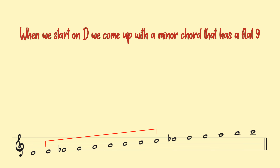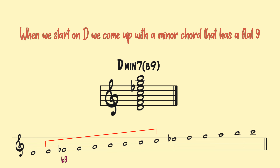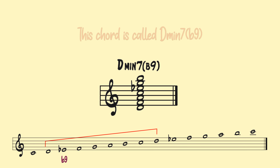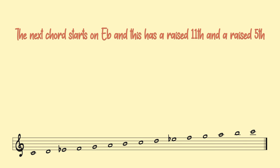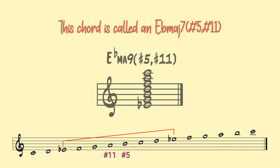When we start on D we come up with a minor chord that has a flat 9. This chord is called a D minor 7 flat 9. The next chord starts on E flat and this has a raised 11th and a raised 5th. This chord is called an E flat major 7 sharp 5 sharp 11.